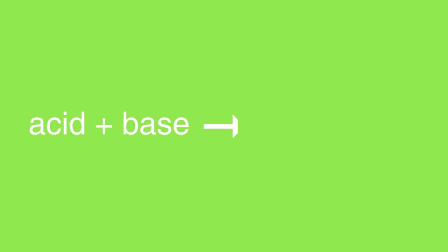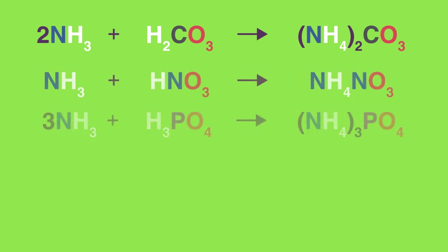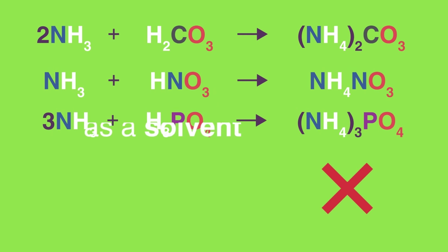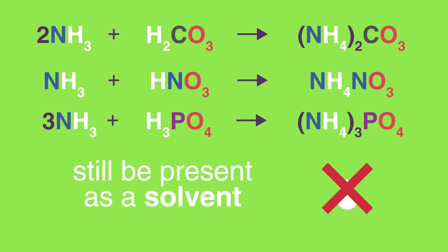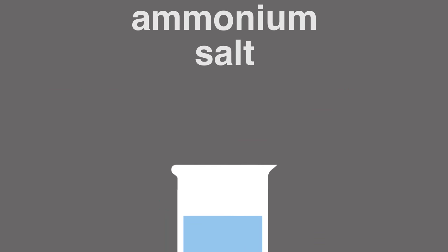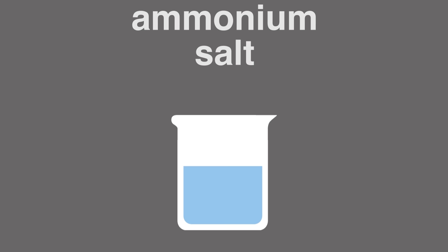You might have learned that an acid plus a base gives us salt and water, and that's quite right most of the time. But interestingly, as you can see, these reactions do not yield water — although water will still be present as a solvent. All of the atoms that make up the reactants come together to form just the one product: the ammonium salt.